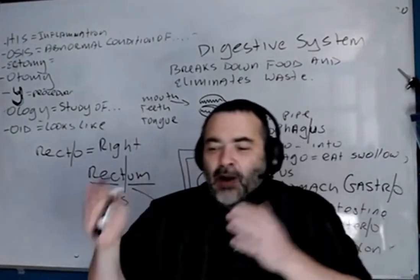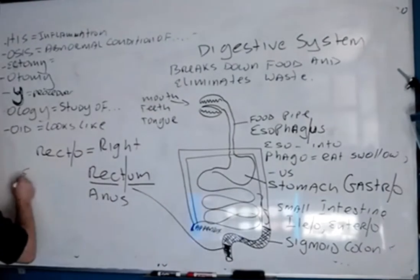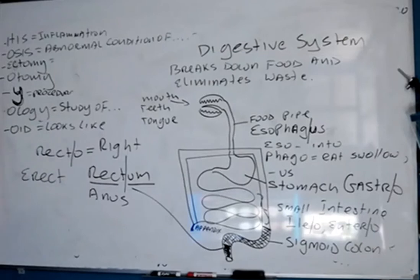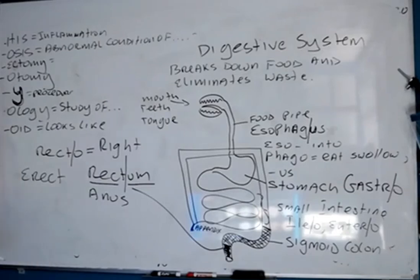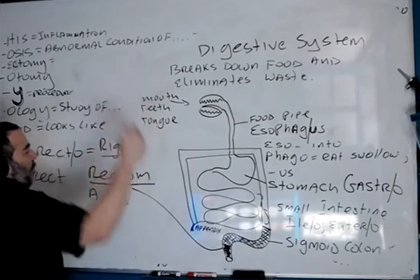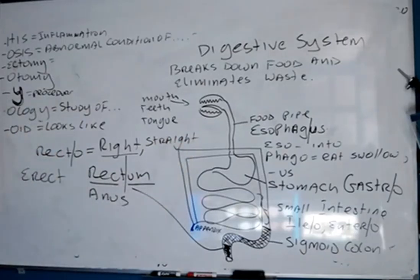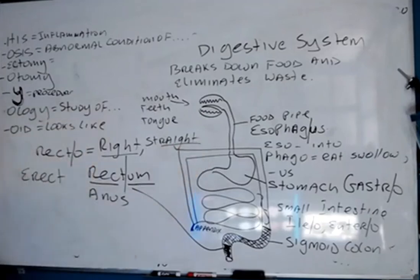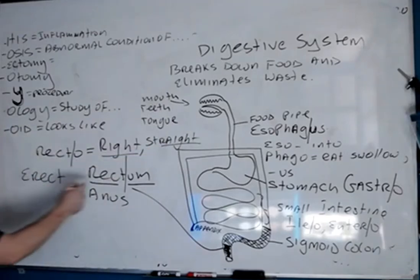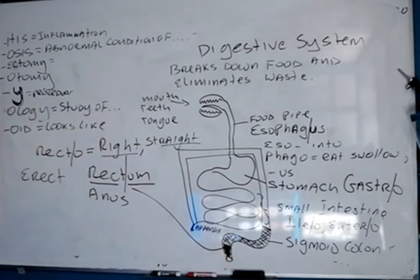Rectum — rect and right are actually the same word. In German the word for right is rect. You may have also seen the word erect. Right doesn't necessarily mean your right hand — it also means straight. If you look at the word straight you can see the word right in it, with just minor changes — that's the evolution of languages. So rectum means something that's straight, and the rectum is the only really straight piece of your colon — that's why they call it the rectum.